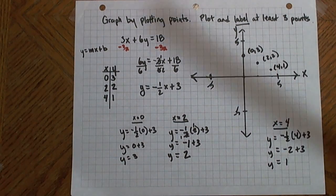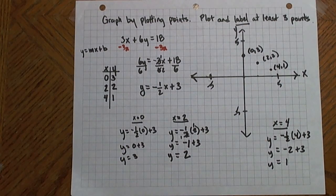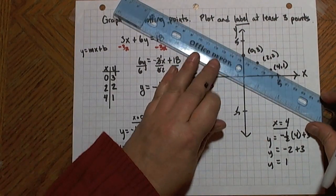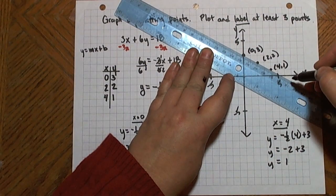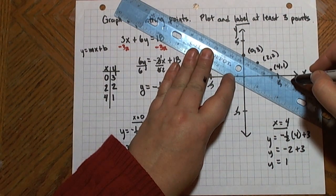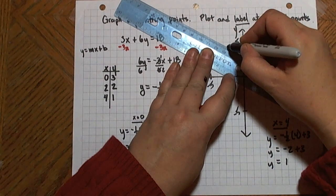So I have my three points now. And now I need to get my ruler. And I put the ruler on the three points. Make sure that they look collinear, that they are in a line. And if so, I go ahead and connect those points.